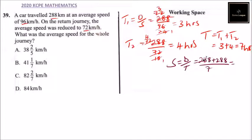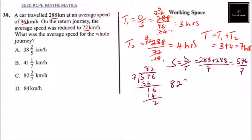When you add this you get 576 divided by 7. If you divide 576 by 7, you get 82 with remainder 2, so we can say it is 82 and 2 over 7.